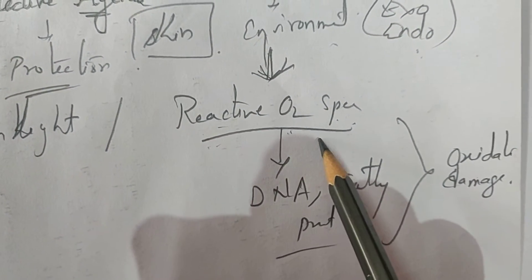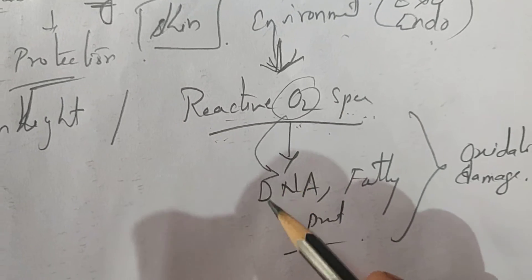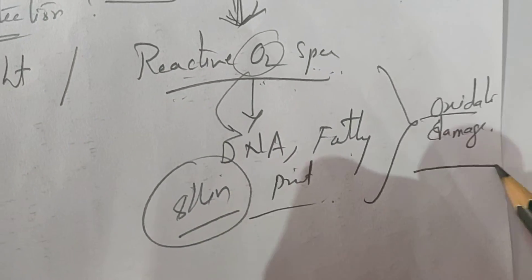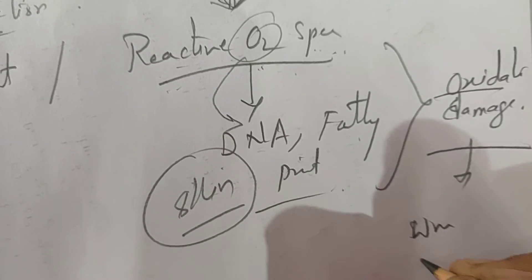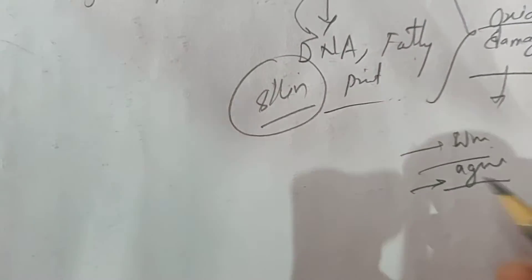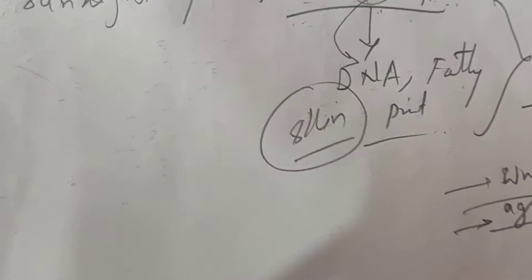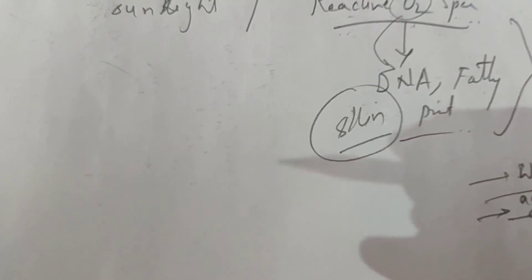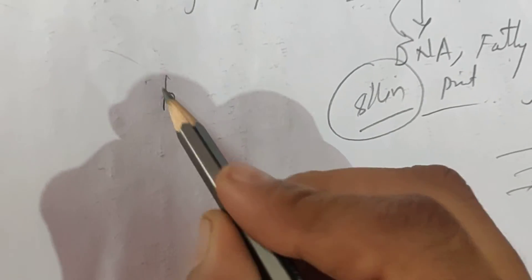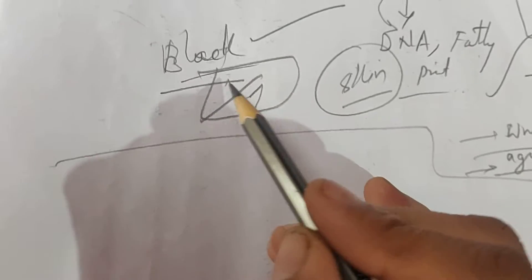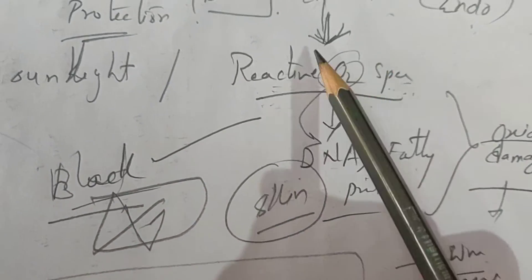This reactive oxygen species reacts with DNA, fatty acids, and proteins present inside our skin, thereby leading to oxidative damage. As a result, skin wrinkle formation, premature aging, irritations, itching sensations, roughness, black color spots, black patches, and pigmentation — all those things can happen.